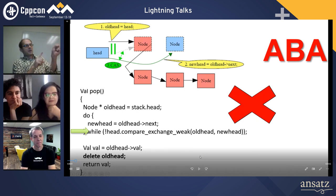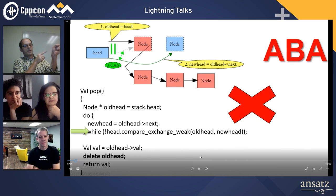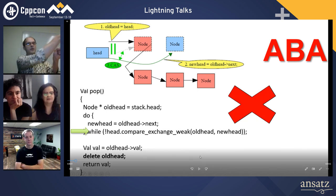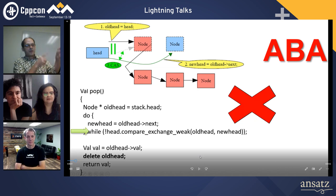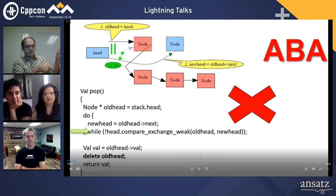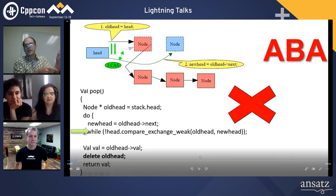...once it's all set up, at the last minute you swap from this being the head to that being the head. So you have your new node, and there's a problem: when you do the swap, the head may have changed. So you use a CAS (Compare-And-Swap) operation to do the swap, and you say: if the head is the same as it used to be, then we're good to go when we make the swap.